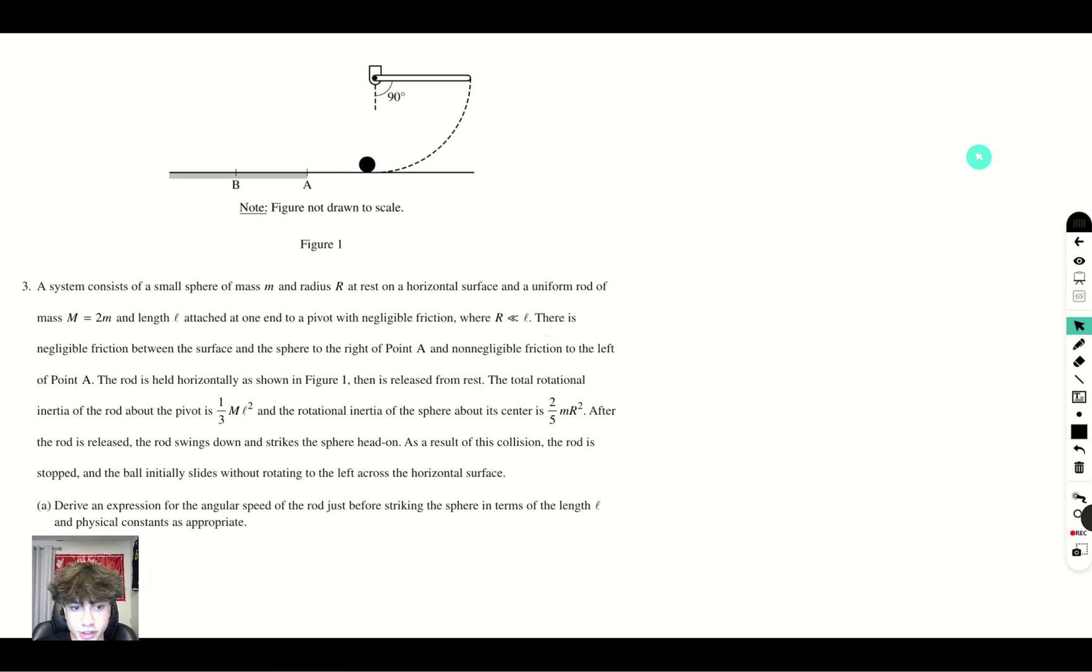The total rotational inertia of the rod about the pivot is 1 third ml squared and the rotational inertia of the sphere about its center is 2 fifths mr squared. After the rod is released, the rod swings down and strikes the sphere head-on. As a result of this collision, the rod is stopped and the ball initially slides without rotating to the left across the horizontal surface. Derive an expression for the angular speed of the rod just before striking the sphere in terms of the length l and physical constants as appropriate.